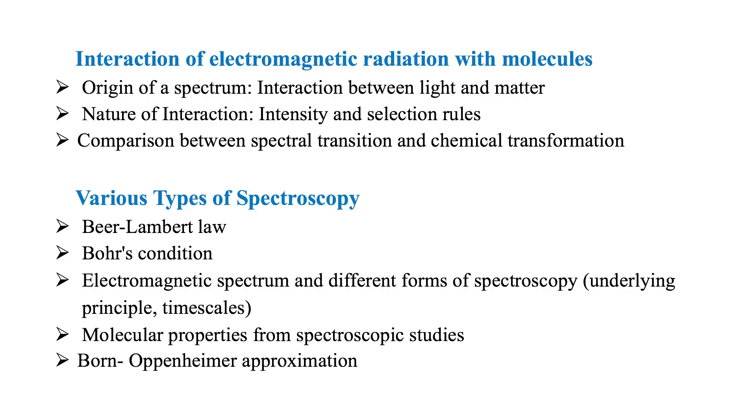These different forms of spectroscopy allow us to monitor different structural properties of matter. Moreover, the time scales associated with different spectroscopies provide information on molecular dynamics. Finally, spectroscopy can be used as an analytical tool for quantitative estimation of a substance. We will start this course with a general description of light-matter interaction and discuss the concepts which are common in any kind of spectroscopy.